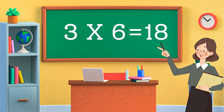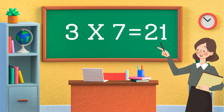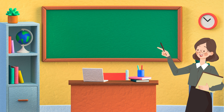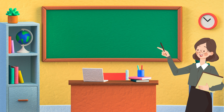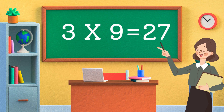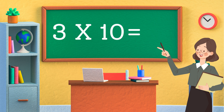Three sixes are eighteen. Three sevens are twenty-one. Three eights are twenty-four. Three nines are twenty-seven. Three tens are thirty.